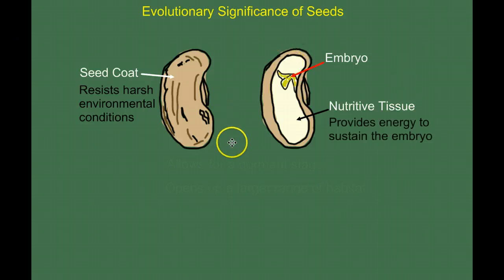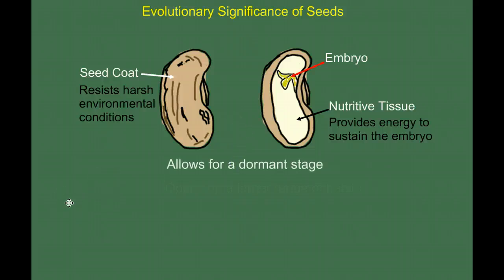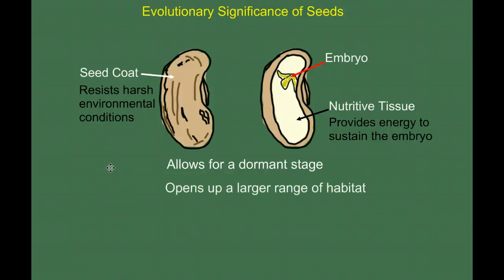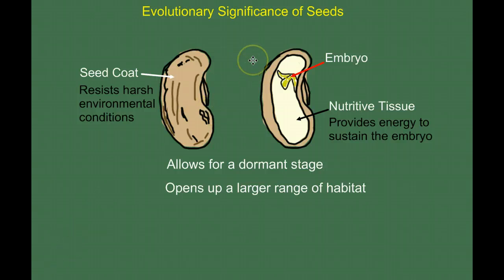What's the significance of this? The thick seed coat and nutritive tissue surrounding the embryo allow for a dormant stage for the plant. When the embryo is formed, it doesn't have to grow right away. If conditions are poor, it can stay inside the seed and sustain life for very long periods of time — even years under the right conditions. This opens up a much larger range of habitat, allowing plants to live and reproduce in areas where environmental conditions vary greatly, rather than only in areas where conditions are relatively stable.